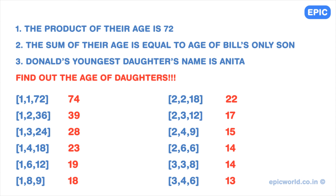For example, if the sum was 17, the ages will be 2, 3, and 12. But his son's age is such that he can't guess, which means it is not a unique set. The sum of 14 has two sets satisfying the criteria. So the age of Bill's son is 14. The possible sets of ages for Donald's daughters are 2, 6, 6 and 3, 3, 8.